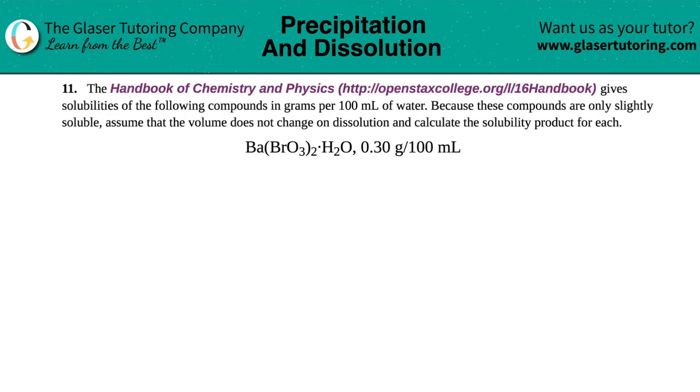Number 11. The handbook of chemistry and physics gives solubilities of the following compounds in grams per 100 milliliters of water. Because these compounds are only slightly soluble, assume that the volume does not change on dissolution and calculate the solubility product for each. We have barium bromate hydrate, Ba(BrO3)2·H2O, and the solubility they give us is 0.3 grams in 100 mL of water.